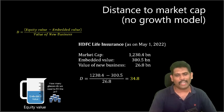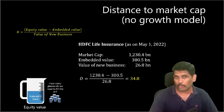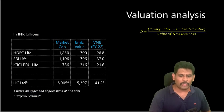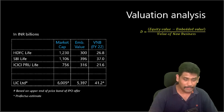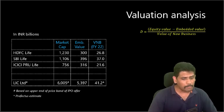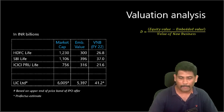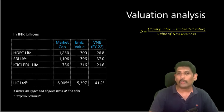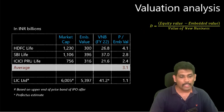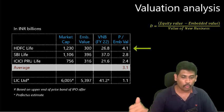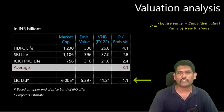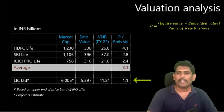Now let's see how this compares with the price to embedded value ratio that most analysts currently use. Looking at the three listed Indian life insurance companies plus LIC Limited — where LIC numbers are based on the upper band of the IPO price — under the price to embedded value metric, the industry average is 3.1x. HDFC Life is much higher at 4.1x, and LIC Limited looks far cheaper at just 1.1x price to embedded value.